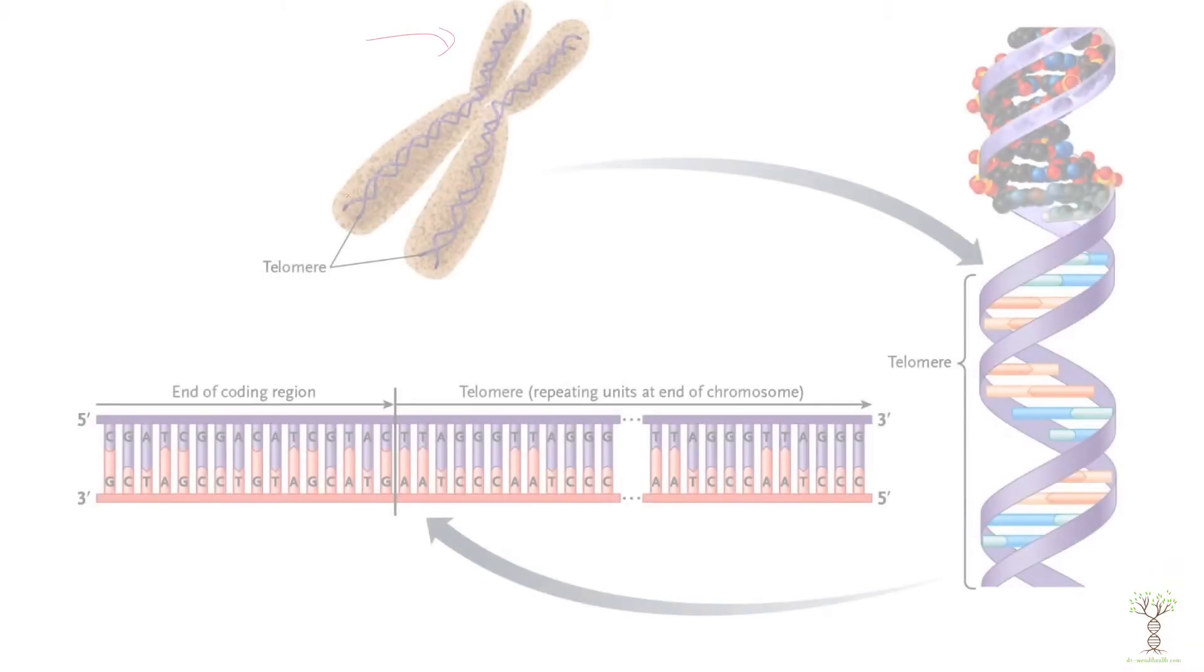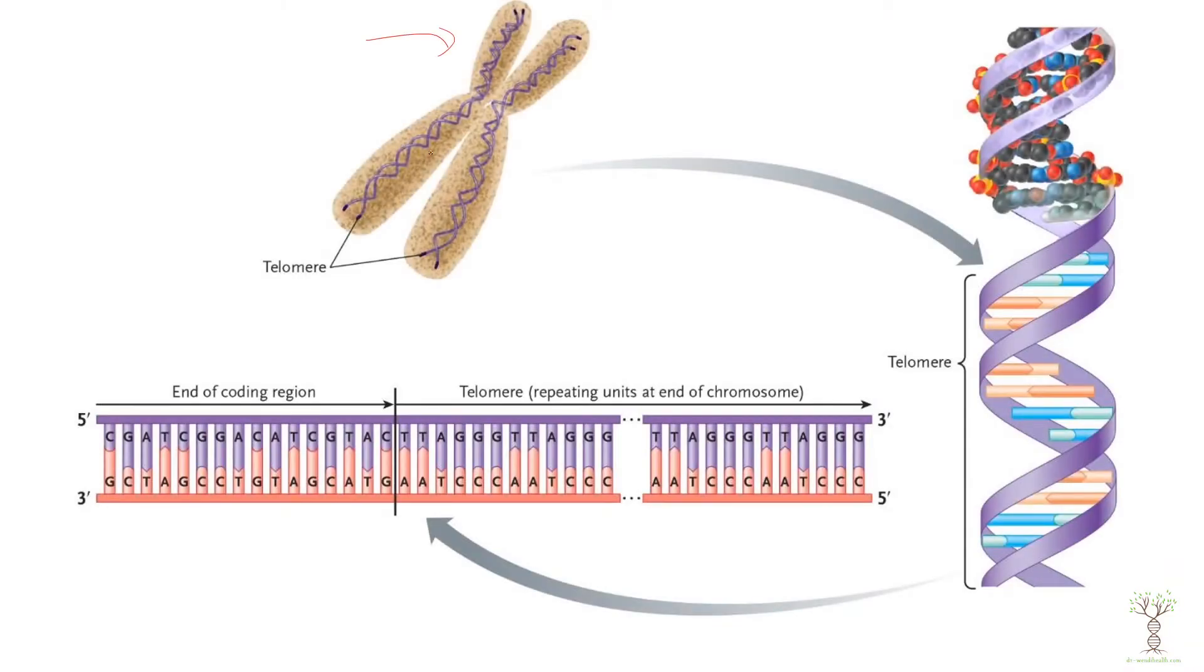Next I want to just mention telomeres. Our human eukaryotic chromosomes are linear, whereas bacteria have circular DNA so it's slightly different. At the ends of our chromosomes we have these little regions called telomeres. These are repeating sequences of nucleotides and they are not genes that will code for proteins, these are non-coding regions.